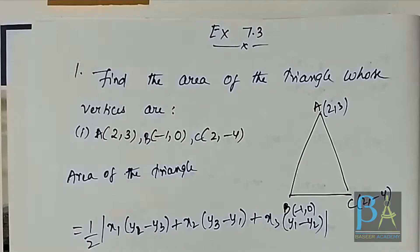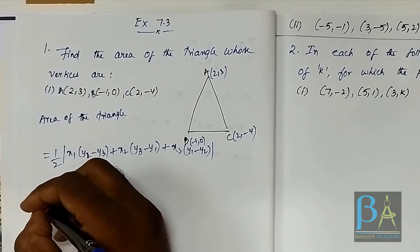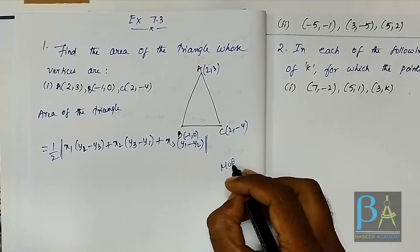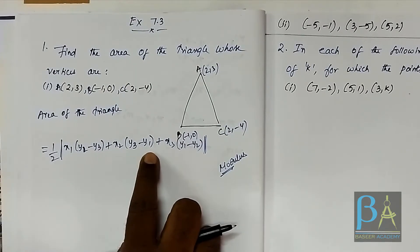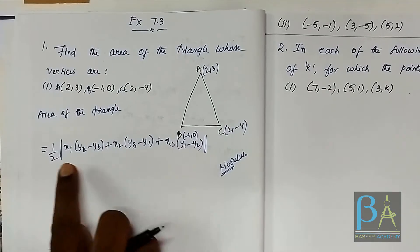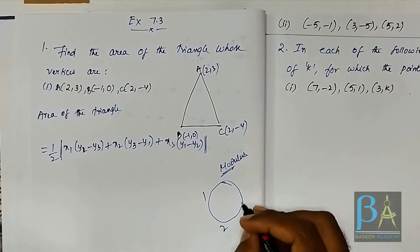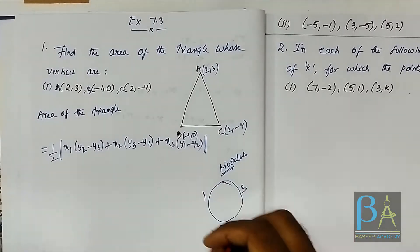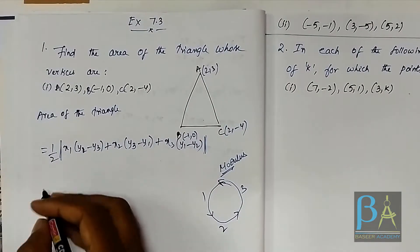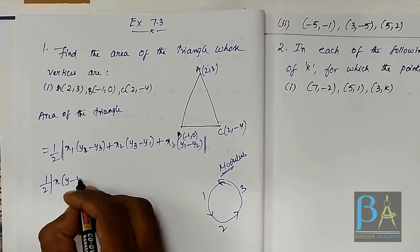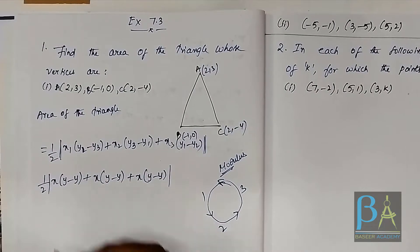We use mod here because we want to take the absolute value — the area cannot be negative. You read the two pipe symbols as modulus or 'mod.' Let me tell you how I remember this formula: I draw a rough circle and write 1, 2, 3, then go anti-clockwise. I write x then y minus y for each term. After 1 comes 2 and 3, after 2 comes 3 and 1, after 3 comes 1 and 2.